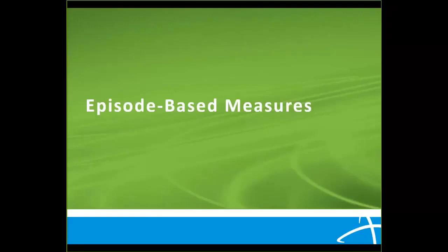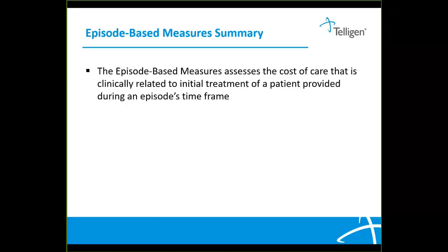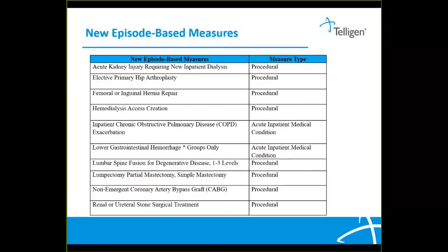Now let's talk about episode-based measures and how they are calculated. The episode-based measures assess the cost of care that is clinically related to initial treatment of a patient provided during an episode's timeframe. These episode-based measures are either based on specific procedures or inpatient medical conditions. Listed here are the 10 new episode-based measures for 2020: eight procedural measures and two acute inpatient medical condition measures. Remember, you will only be scored on the measure where you meet the case minimum — at least 10 cases for a procedural episode-based measure or 20 cases for an acute inpatient medical condition measure.